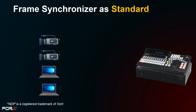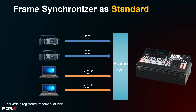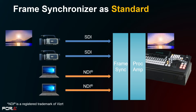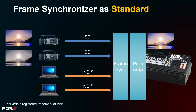All inputs are equipped with a frame synchronizer, allowing for asynchronous signal input from PCs and other devices. All inputs are also equipped with a process amplifier function to adjust the video level and chroma level of the input signal. This can be used to adjust sources with different tints from different cameras.